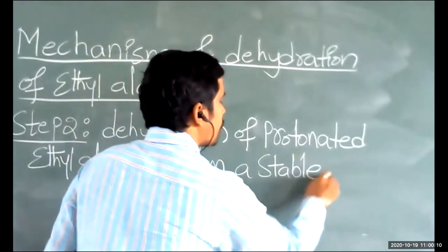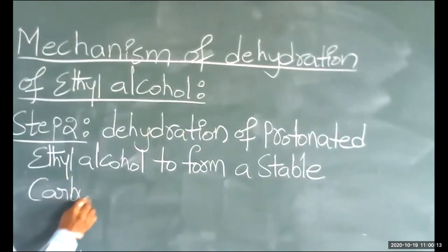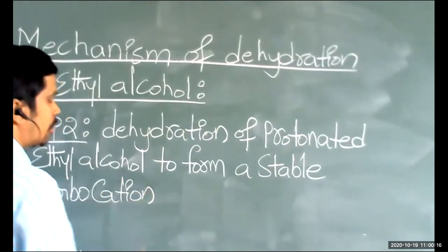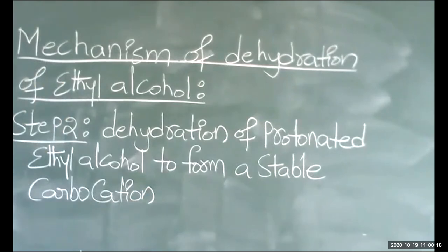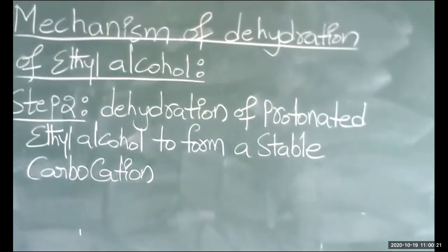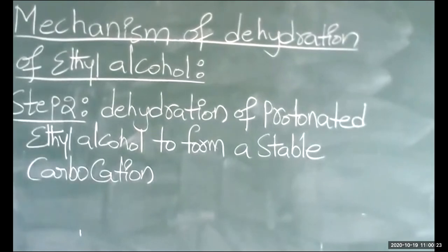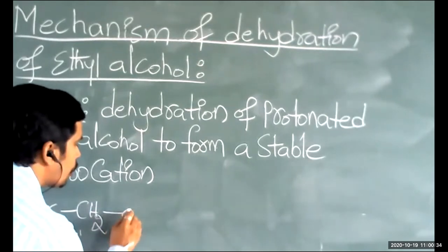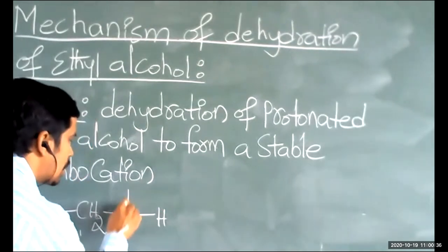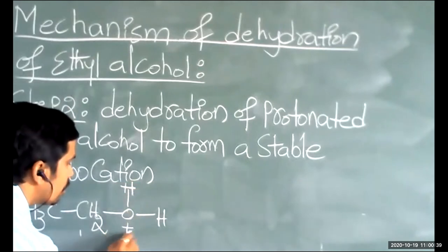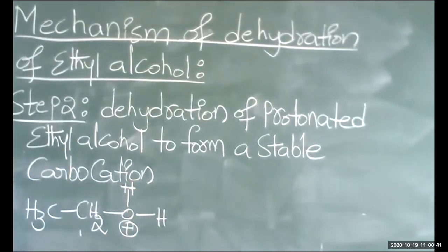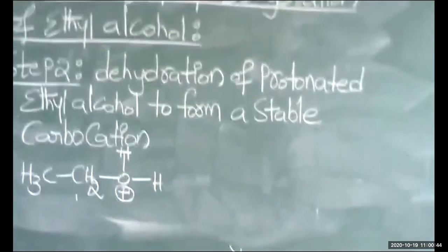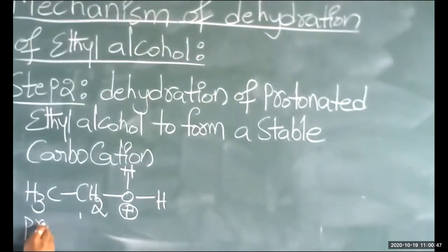A stable carbocation is formed in step two. This question is important for PU for three marks, so please listen carefully. I am taking the protonated ethyl alcohol: CH₃–CH₂–O⁺H₂, where oxygen has a positive charge. This is called protonated ethyl alcohol.